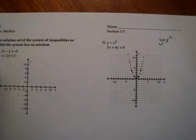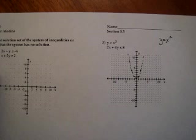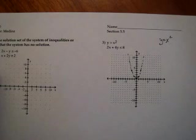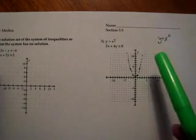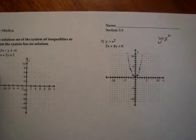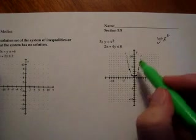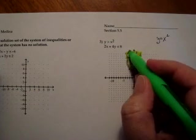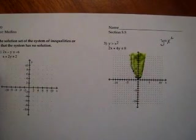The dotted parabola breaks the graph into two regions: inside and outside the parabola. To figure out which to shade, I test the point (0,10). If x=0 and y=10, the inequality y > x² gives 10 > 0, which is true. So I shade inside the parabola in green.